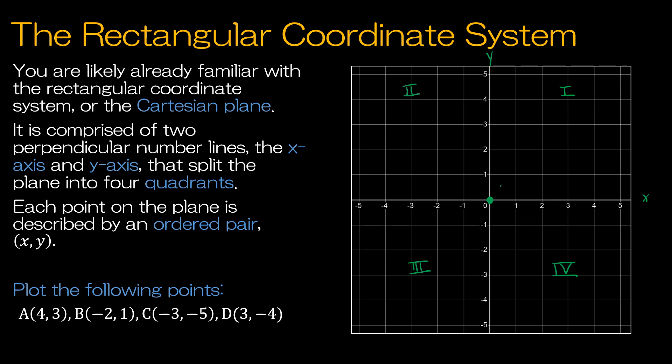The ordered pairs give us the x-coordinate followed by the y-coordinate, so the origin is at point (0, 0).